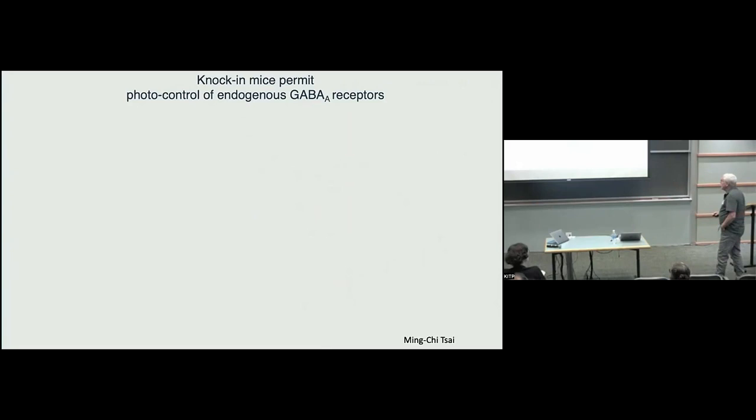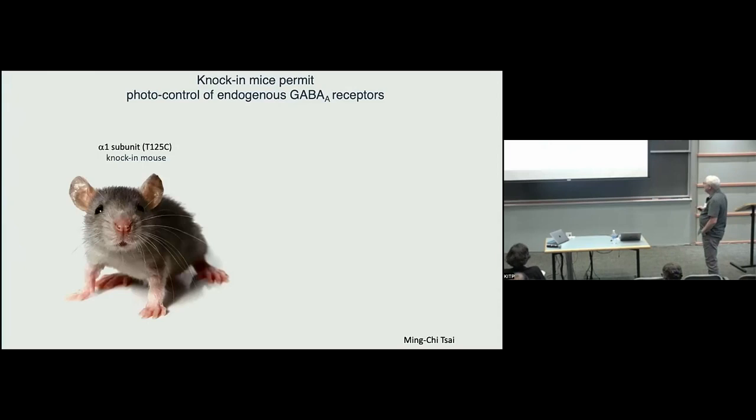This was before the days of CRISPR. So this was hard to do and cost a lot of money and took a lot of time. But we used homologous recombination and struggled and spent a lot of money and eventually were able to come up with mice where the genomic receptor gene had this mutation built into it. So here's the mutation for the alpha one subunit. We also did this for the alpha five subunit. And then we have these endangered species lines of mice that are photoswitch ready. All you need to do is add the compound and you have light activated GABA receptors.